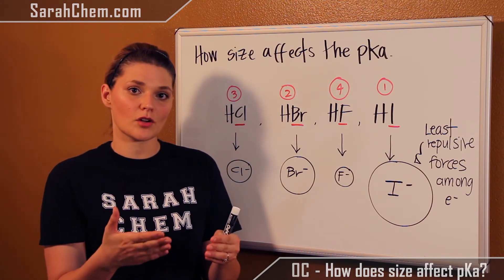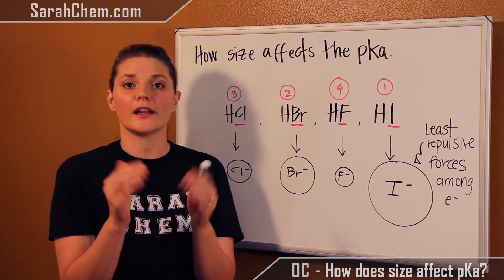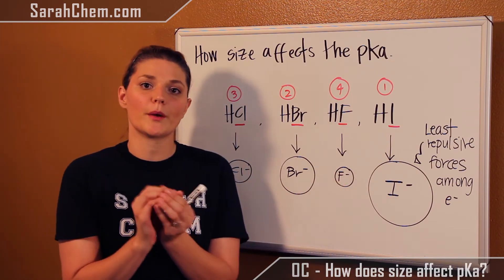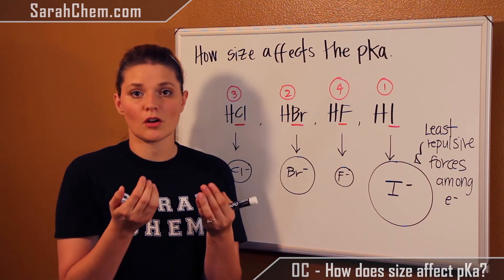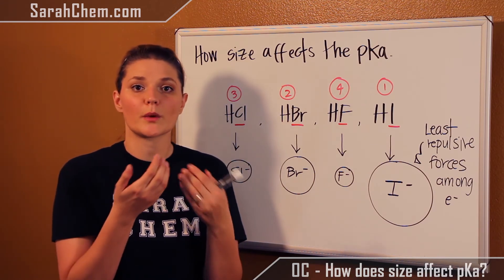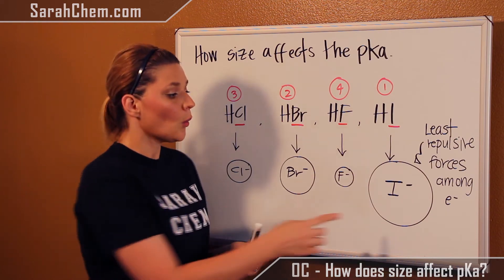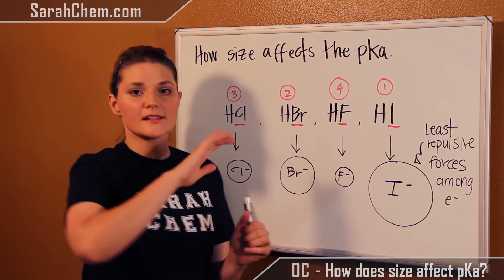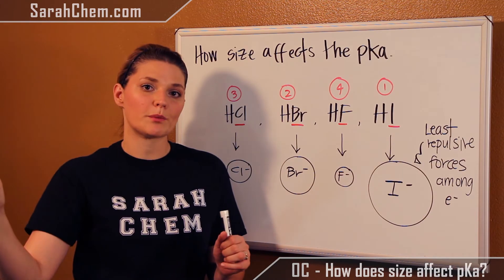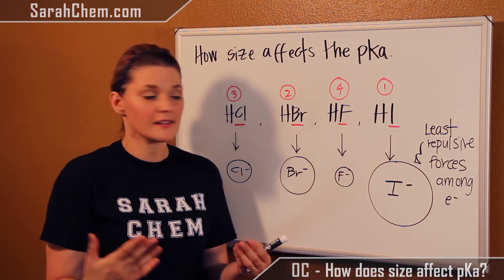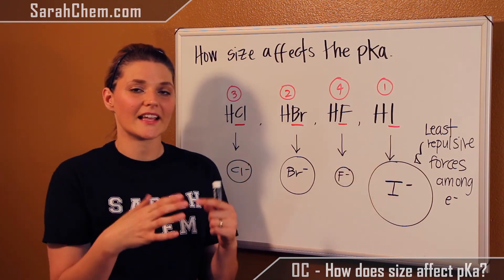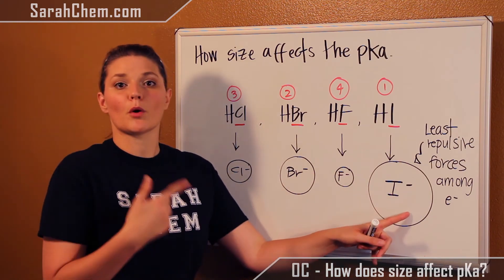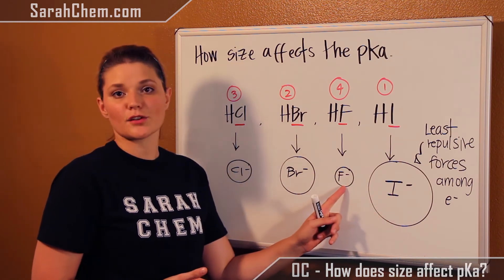When you have more electrons all compacted into a space, you're going to have more repulsive forces. Because in fluorine everything is so compacted, there would be very strong repulsive forces between the electrons. Whereas in iodine — the iodide ion — the electrons are spread out over a much larger space, so the repulsive forces are much lower. Therefore, these electrons in iodide would be more stable than the electrons in fluoride.